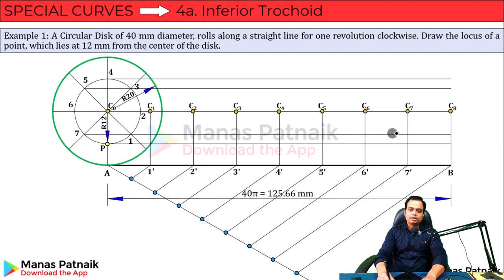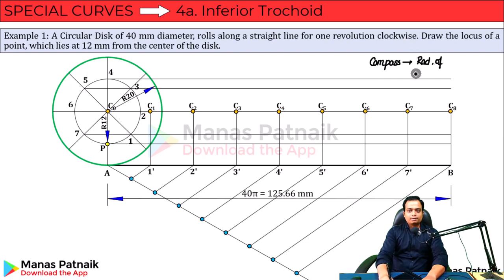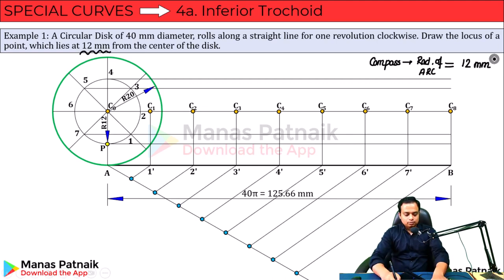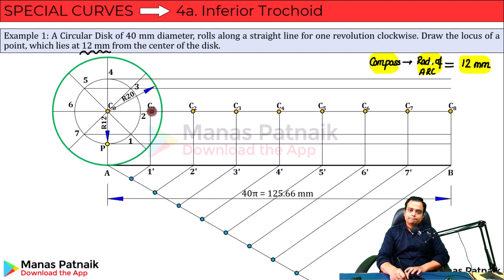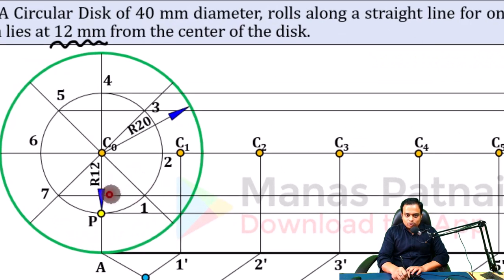These are the different locations of the centers as the circle rolls: C1, C2, C3, and so on until C8. Now use your compass. The radius of the arc is equal to 12mm — lock that in your compass. Go to point C1, place the steel leg of the compass there, and on the horizontal line passing through point 1, make an arc. This gives you point P1.